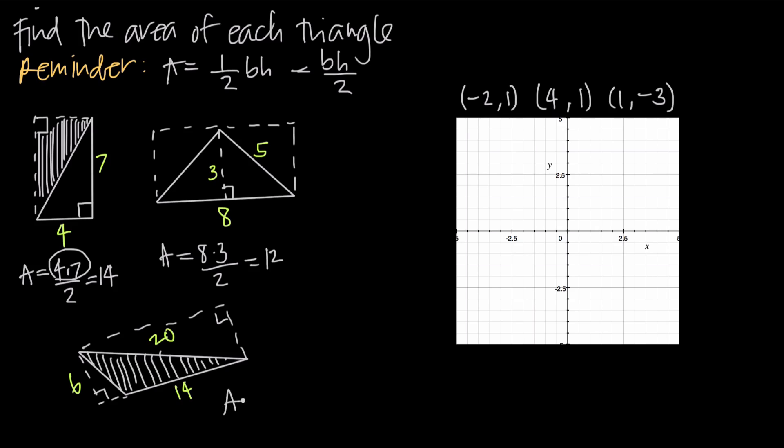And so what we do is we recognize that area is going to be base or 14 times the height or 6 divided by 2 just to get the area of the triangle instead of the rectangle. So 14 times 6 is going to be 84. 84 divided by 2 is going to be 42, and so the area will be 42.